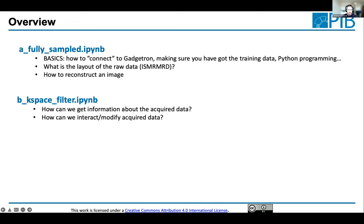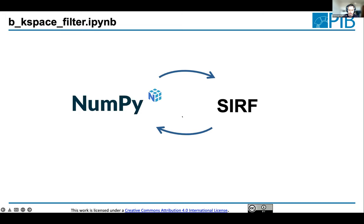There's another notebook on k-space filtering — applying a filter to k-space data before reconstruction. The main idea is to show you how to interface between SIRF objects and other Python functionality, specifically NumPy: how to get the k-space raw data out of a SIRF object, modify it, and put it back to continue reconstruction. This is a good starting point for trying out quick modifications within a reconstruction pipeline.